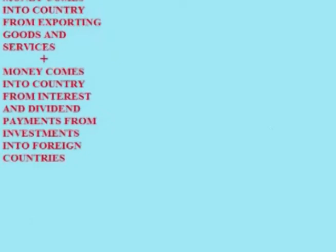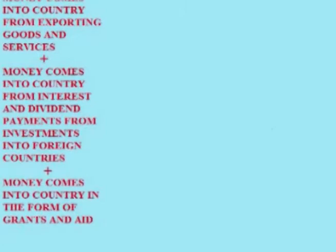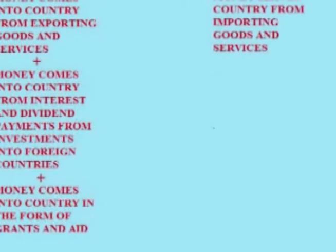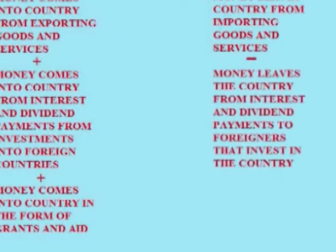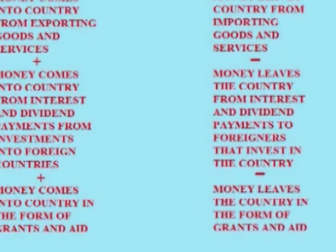To calculate the current account balance, you take the total amount of money that comes into a country from exporting goods, add the money that comes in from dividend and interest payments from investments in foreign countries, and add the money that comes in from grants and aid. Then you subtract the money paid out from importing goods and services, subtract the interest and dividends paid out to foreigners investing in the country, and subtract the money given to foreign countries in the form of grants and aid. The total is the current account balance.